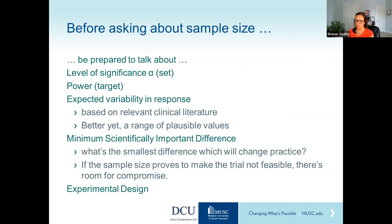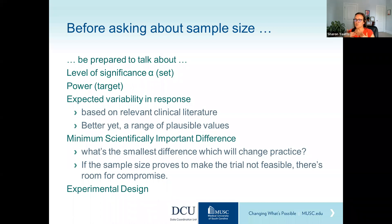Before asking about sample size, you now know to be prepared to talk about: the level of significance alpha, pre-specified in advance; the target power, with 80% as a minimum in most cases; the expected variability in response, hopefully based on relevant literature, and ideally a range of plausible values so you can stress-test the sample size; and some thoughts about what the minimum scientifically important difference is — the smallest difference that's going to change practice. Not everybody may agree on that, and if the sample size for that difference makes the trial not feasible, you may have to have some room for compromise.